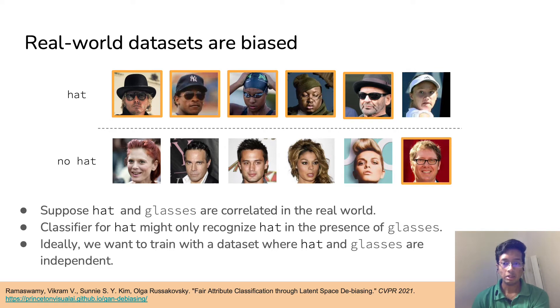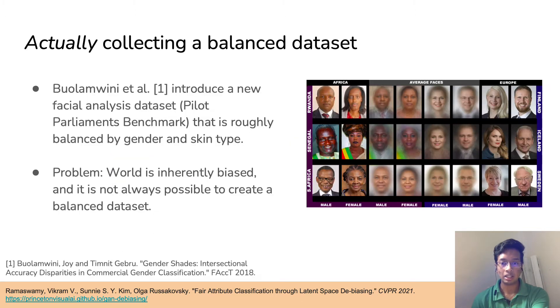Similarly, suppose wearing hats is correlated with wearing glasses. This classifier might only recognize hats in the presence of glasses. What we want ideally is a dataset wherein these two attributes are independent.